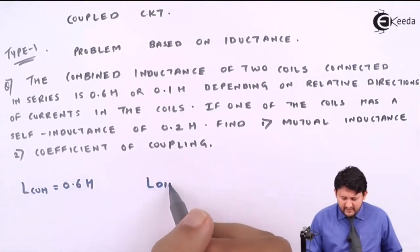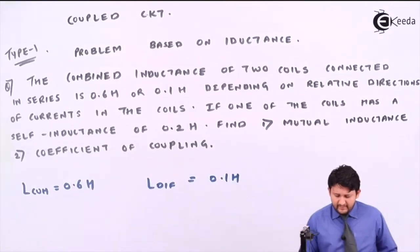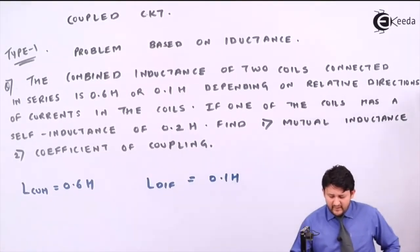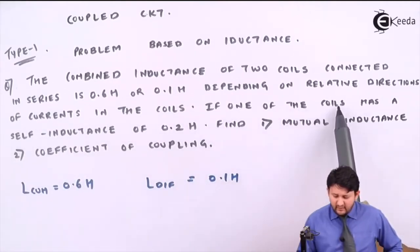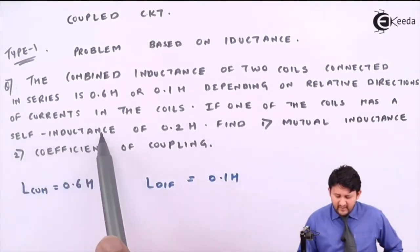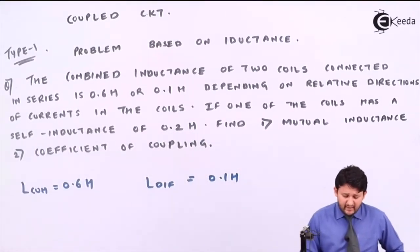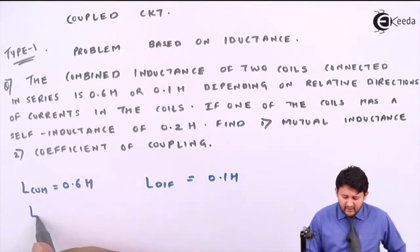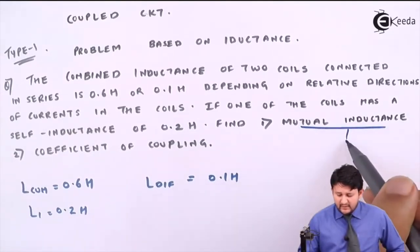This depends on relative direction of currents in the network. If one of the coils has a self-inductance of 0.2H - one of the coils means it can be L1 or it can be L2 - so I take that value as L1 equals 0.2 Henry.